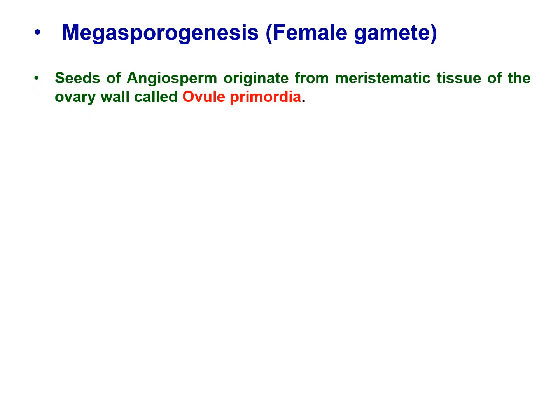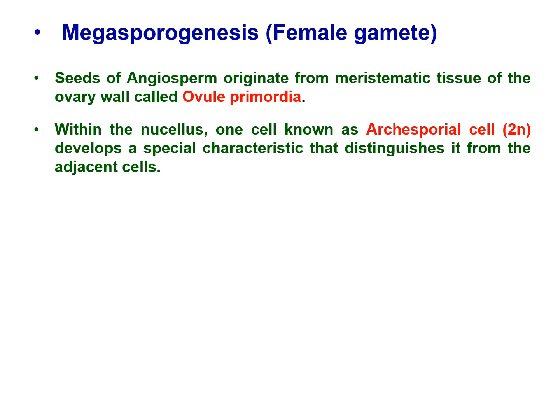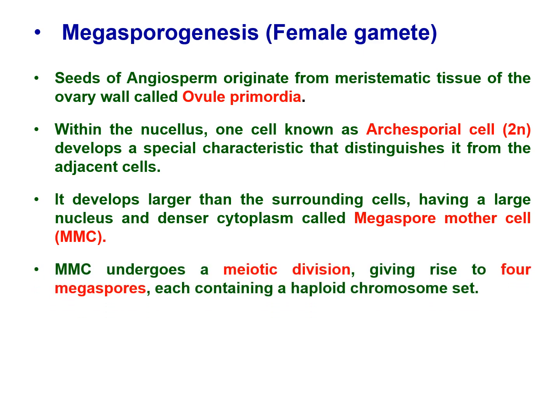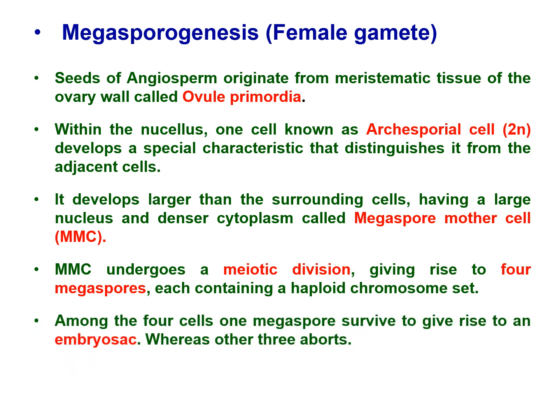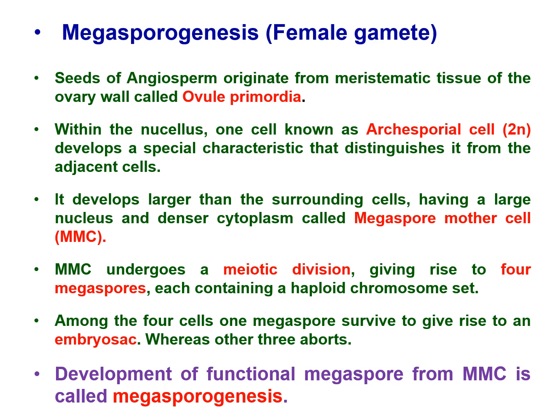Megasporogenesis: Seeds of angiosperms originate from meristematic tissue of the ovary wall called ovule primordia. Within the nucellus, one cell known as the archesporial cell develops special characteristics — it becomes larger than surrounding cells with a large nucleus and denser cytoplasm, and is called the megaspore mother cell. The megaspore mother cell undergoes meiotic division giving rise to four megaspores, each containing a haploid chromosome set. Among the four cells, one megaspore survives to give rise to an embryo sac while the other three abort. The development of a functional megaspore from the megaspore mother cell is called megasporogenesis.